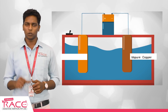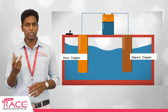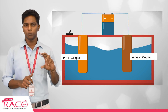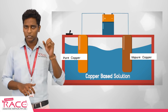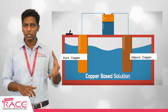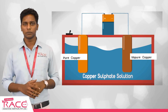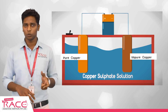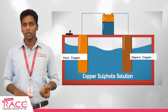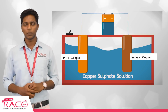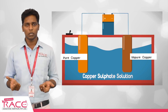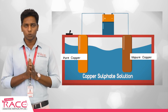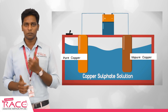In electro refining, we use an impure copper rod as the anode and a pure copper rod as the cathode. The negative side of the battery is connected to the cathode. The purpose is to deposit purified copper at the cathode, making it grow thicker, while the impure anode dissolves. The electrolyte solution used is copper sulfate solution, CuSO4.